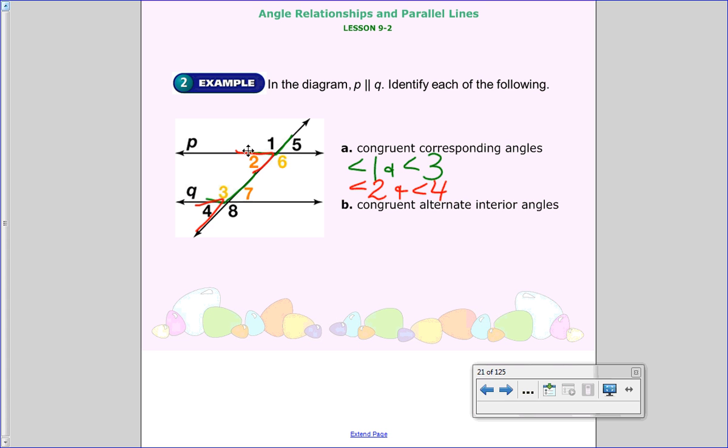Then we have angle 5 and angle 7, and finally angle 6 and angle 8. So those are what you should have on the opposite side with my poorly written and hummed music.